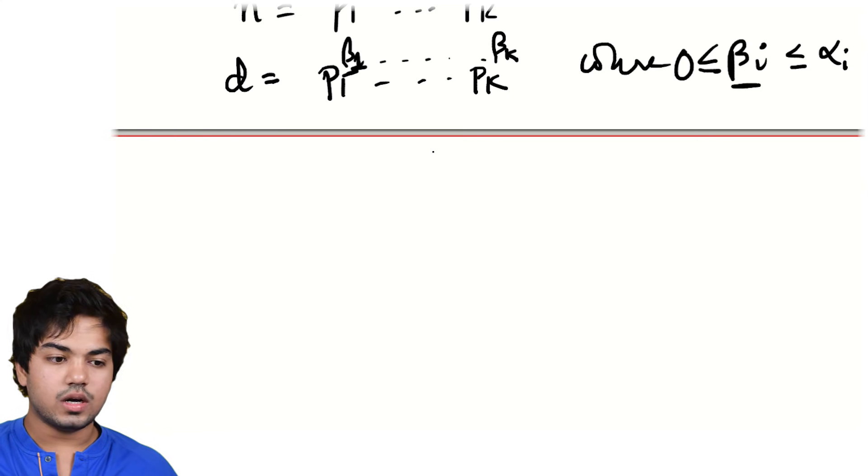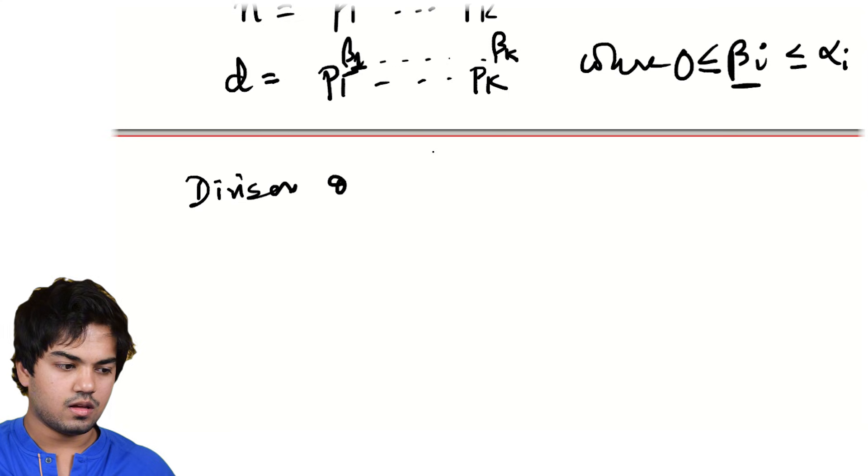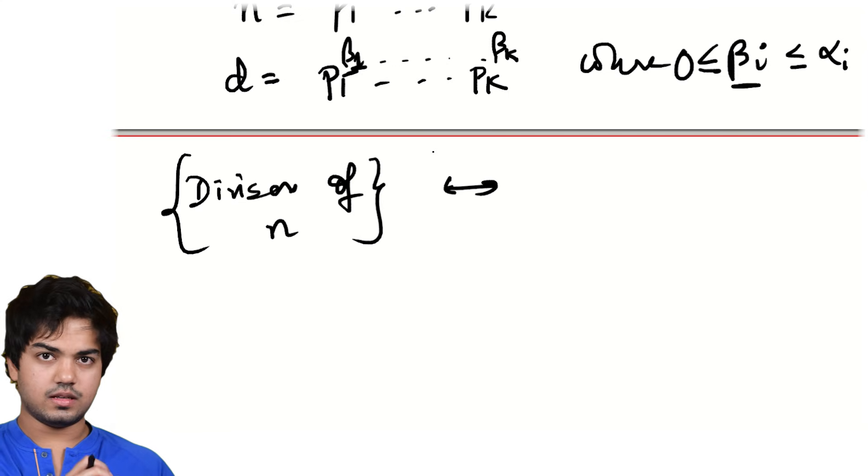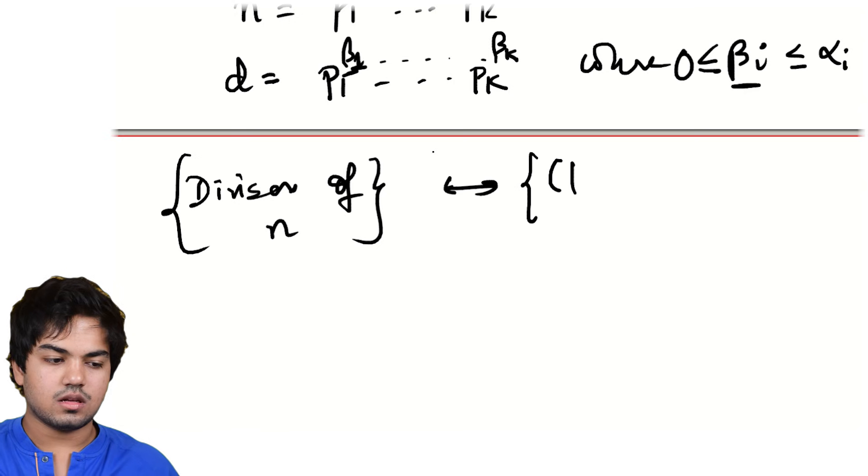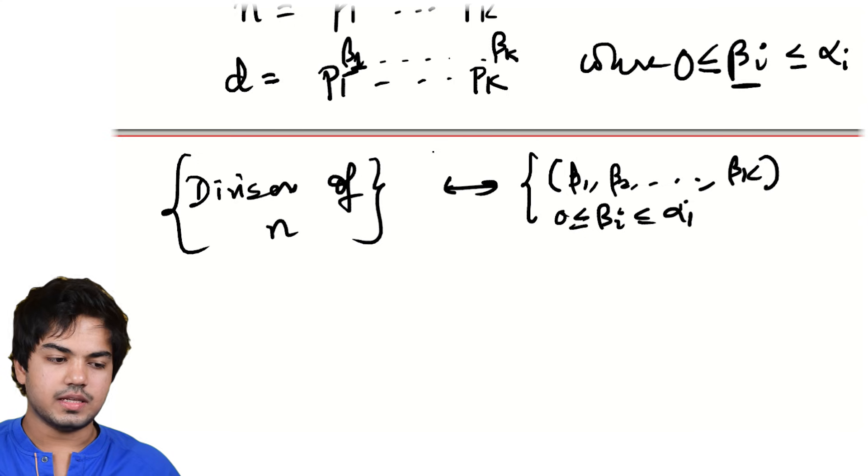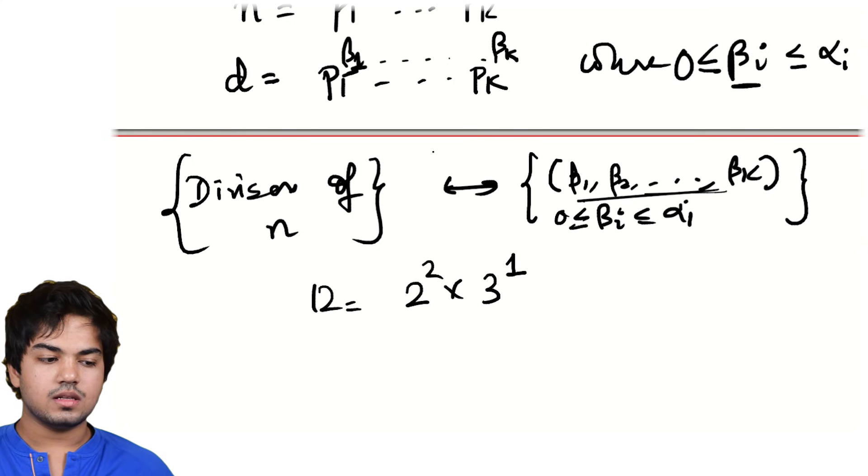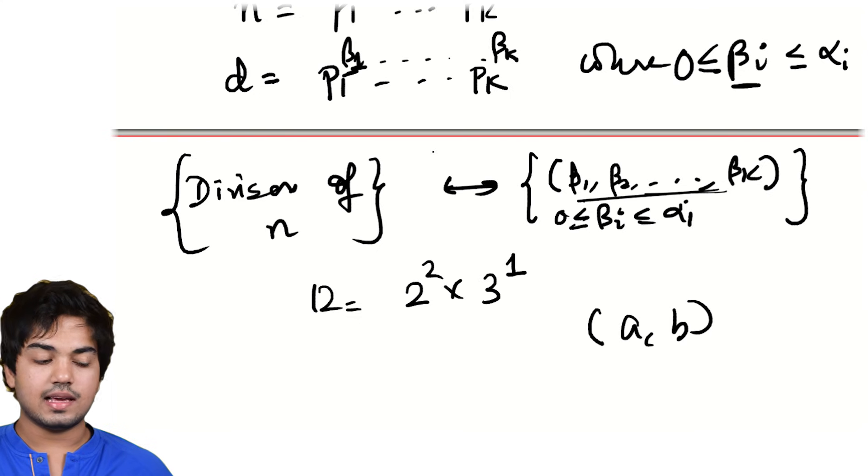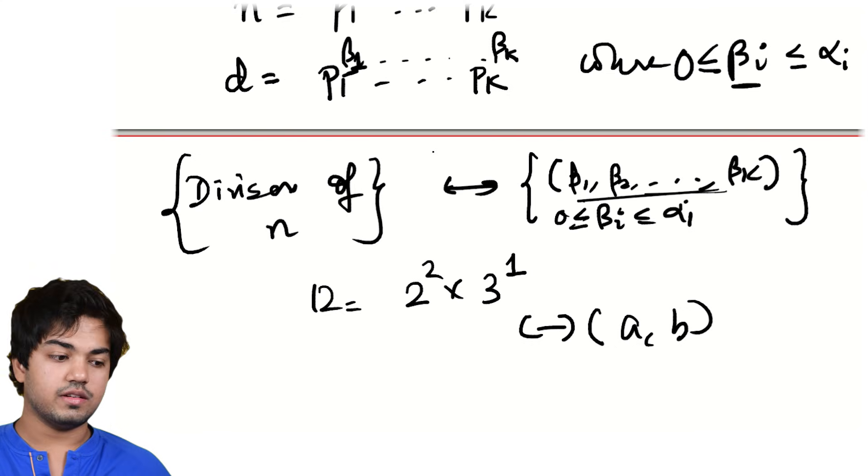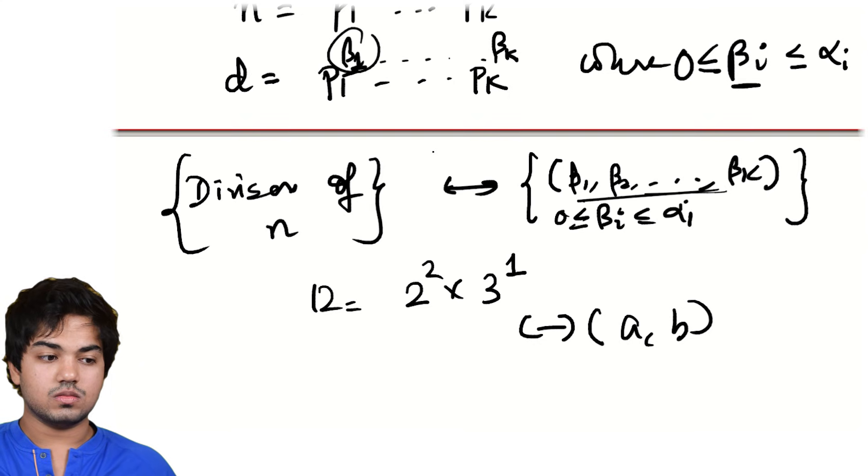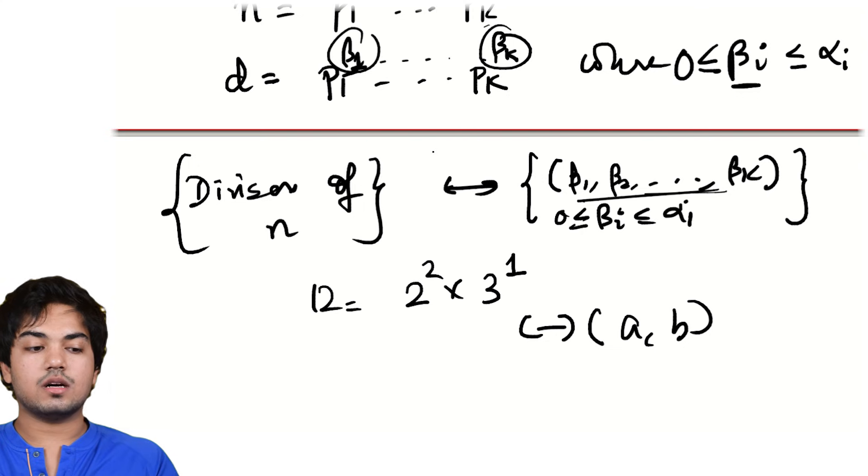So really, a divisor corresponds to a tuple like this. Divisors of n, they are in sort of what's called a one-to-one correspondence. It's what it sounds like. A one-on correspondence with tuples beta one, beta two, all the way up to beta k, where the beta i are between zero and alpha i. What does that mean? That if I choose a tuple like this, so for a fixed number, say, say 12, 2 squared times 3 to the power one, then tuples of the form a comma b, where a is less than equal to two and between and greater than equal to zero and b is less than equal to one and greater than equal to zero corresponds uniquely to a divisor of 12. And the mapping is very simple. You send the divisor d to the tuple composed of the powers of the primes that show up, and you send the tuple beta one, beta two, beta k to p one to the beta one, p two to the beta two, p k to the beta k.